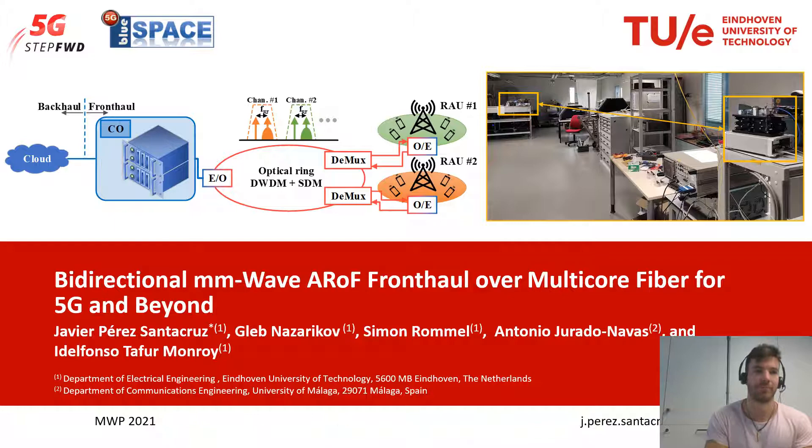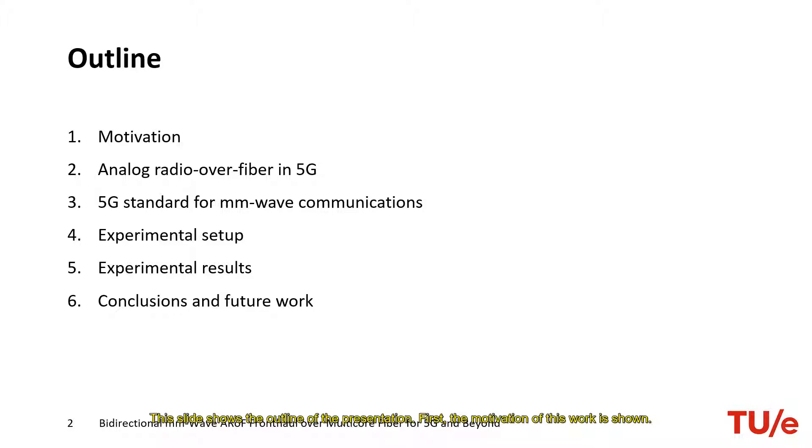This slide shows the outline of the presentation. First, the motivation of this work is shown. Next, the role of analog fiber in 5G is presented. Then, 5G standard considerations concerning millimeter wave communications are introduced. Subsequently, the experimental setup and results are explained and presented. Lastly, conclusions and future lines of the presented work are remarked.